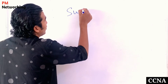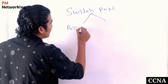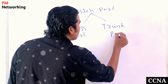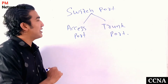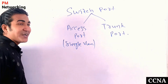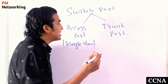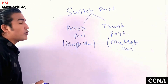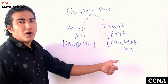Now, if I talk about switch ports, there are two types of switch port. The first one is access port, and the second one is trunk port. Access port is a switch port which carries traffic of a single VLAN. And if I talk about trunk port, trunk port is also a switch port, but it carries traffic of multiple VLANs. So: access port carries traffic of single VLAN, and trunk port carries traffic of multiple VLANs.